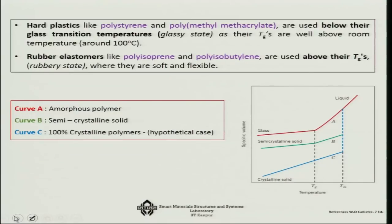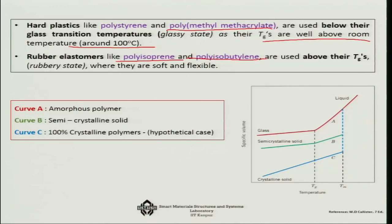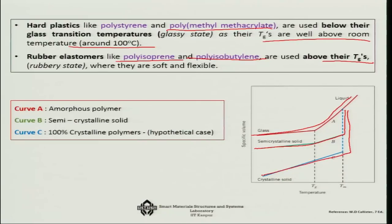Hard plastics like polystyrene and PMMA are generally used below their glass transition temperature — in the glassy state — because their Tg values are well above room temperature, around 100°C. Elastomers like rubbers, polyisoprene, and polyisobutylene are used above their Tg in the rubbery stage, which is why they are soft and flexible. If you cool them, they will enter the glassy stage. So: rapid cooling gives a glassy stage, slower cooling gives a semi-crystalline solid, and very slow cooling gives a crystalline solid.